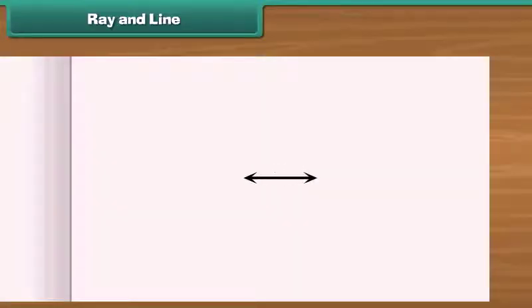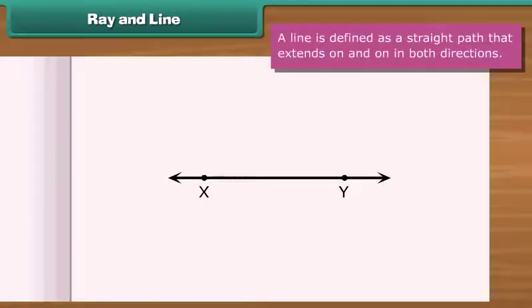What if a straight path extends on and on in both directions? This becomes a line. For example, line XY. Thus, a line is defined as a straight path that extends on and on in both directions.